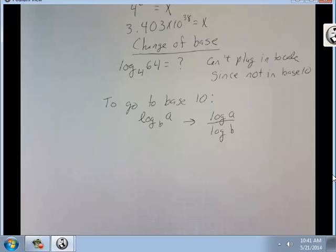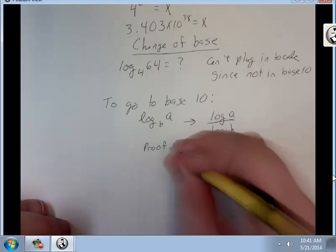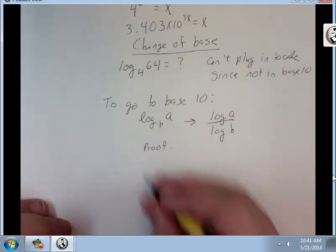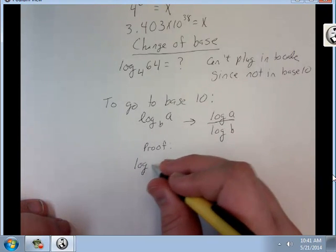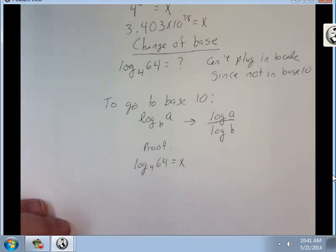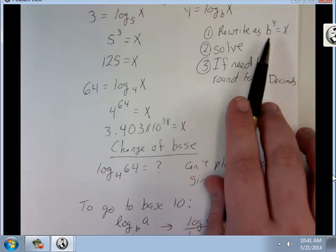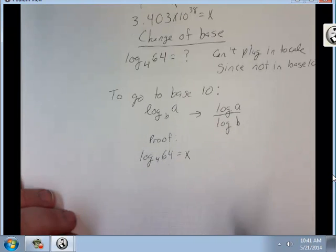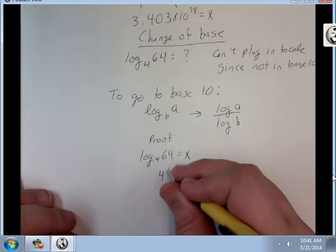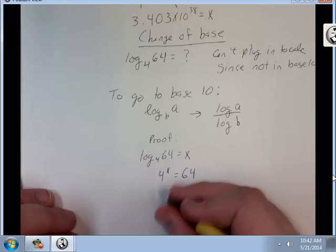Let's prove it. So, log to a base 4 of 64 equals x. I can rewrite it just like here as 4 to the x equals 64. Now, I can just solve it like with exponential.